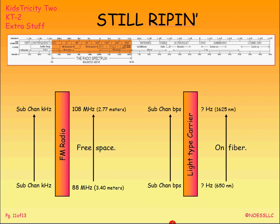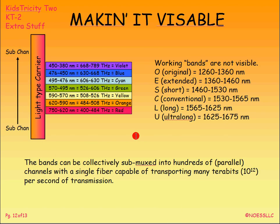Since you can't see the actual color — it's beyond human vision — I've substituted visible colors to show you how this works. I bring in my sub-channel as bits per second and pulse an outgoing light, in this case a violet light, somewhere in the terahertz frequency range. I'm giving you the frequency range and the nanometer length. I bring in a digital signal and pulse this light on and off at terahertz rates.